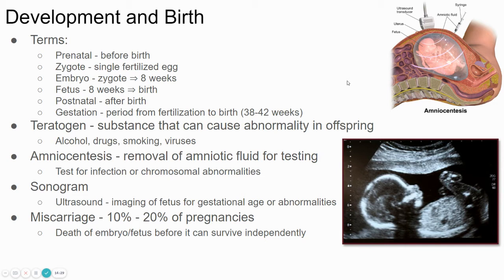When a woman is pregnant, things that she does can affect the developing embryo and fetus. A doctor will typically tell a woman not to drink any alcohol, not to smoke, not to take drugs, and to eat healthily. The mother needs to have enough energy and nutrients in her blood to support both herself and the developing fetus. Certain things like alcohol can go through the placenta and affect the fetus's development in a negative way. Sometimes a woman might have a child that is a low birth weight, or a premature birth in which she has the baby before the 38-week point.